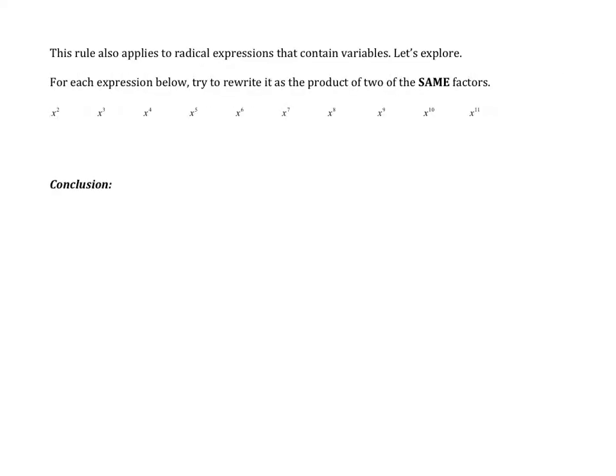So now, the rule of pulling out perfect squares also applies for variables. Let's think about what makes something a perfect square. The square root of 100 is 10 because 10 times 10 is 100. The square root of 36 is 6 because 6 times 6 is 36. What makes something a perfect square is that you can break it into two of the same exact factors. So think about that when it comes to variables.